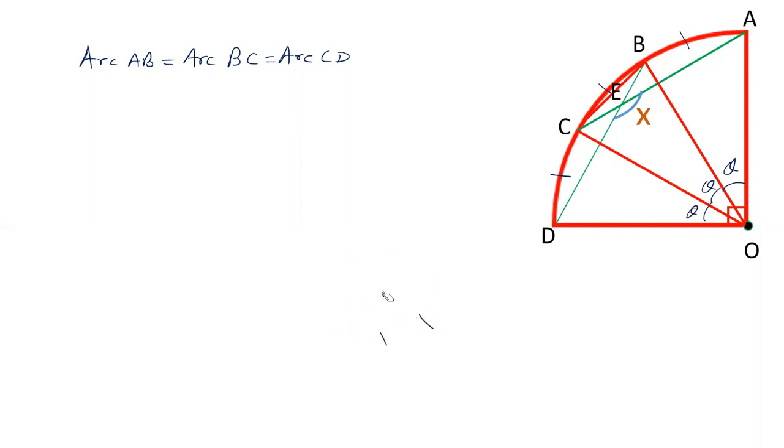All the three angles theta will be equal. Angle AOB equals angle BOC equals angle COD equals theta. And we already know that angle AOD is 90 degrees which equals theta plus theta plus theta. That is 3 theta equals 90 degrees. The value of angle theta is 90 by 3, that is 30 degrees.